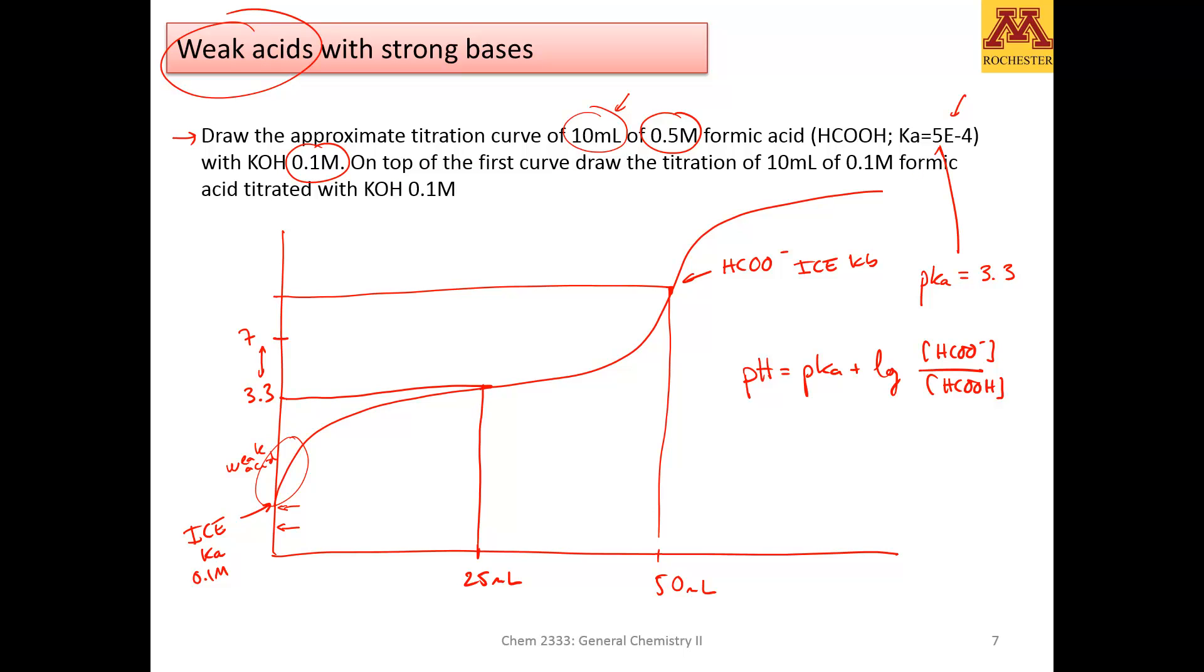Notice that the second part of the question says, on top of the first curve, draw the titration curve of 10 milliliters of 0.1 molar formic acid. Well, if it's 0.1 molar, notice that first of all, the equivalence point will take place at 10.5 milliliters. However, it will start at a higher pH, because it's more diluted.